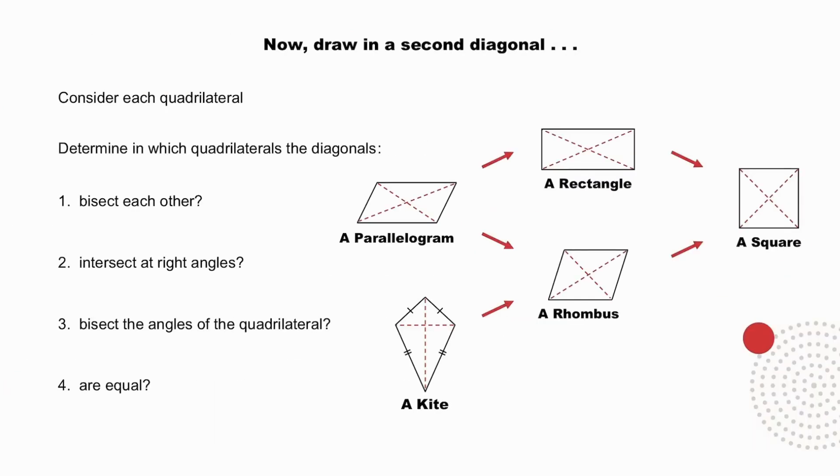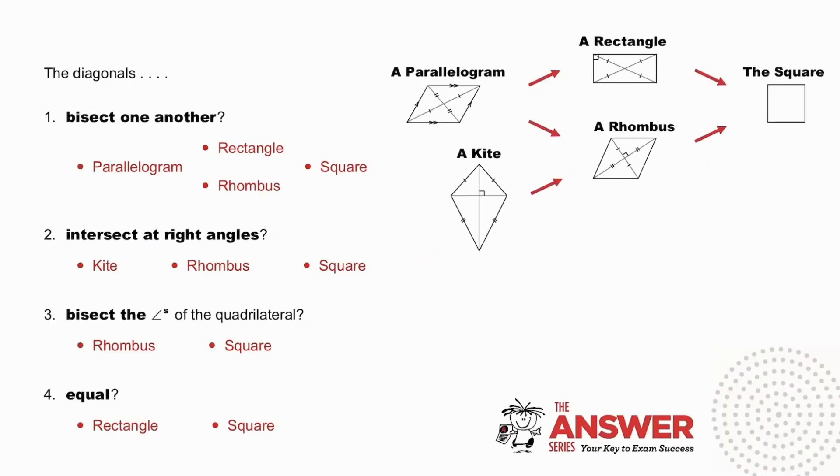Now, draw in a second diagonal. Pause as you consider each quadrilateral and determine in which quadrilaterals the diagonals bisect each other, intersect at right angles, bisect the angles of the quadrilateral, or are equal. So, how did you do? Pause to check your answers. Did you apply the logic?